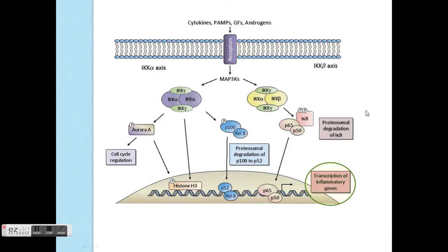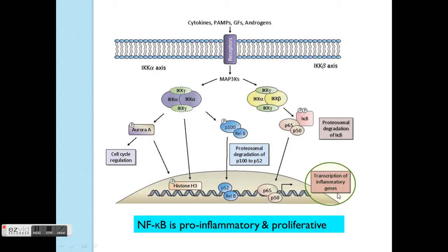The last topic is NF-κB. There are two main pathways: canonical and non-canonical. The main thing here is that NF-κB involves IKKs — specifically IKK-alpha, beta, and gamma. The canonical pathway mainly involves degradation of I-κB, which causes transcription of inflammatory genes. Therefore, NF-κB is a pro-inflammatory and proliferative pathway. That's it for now.